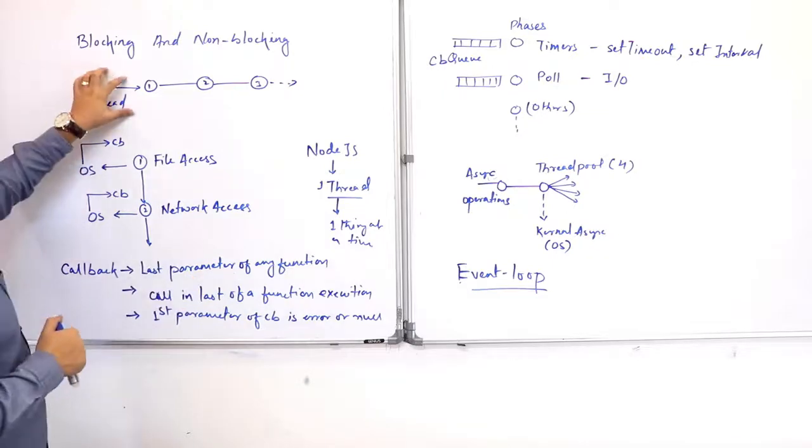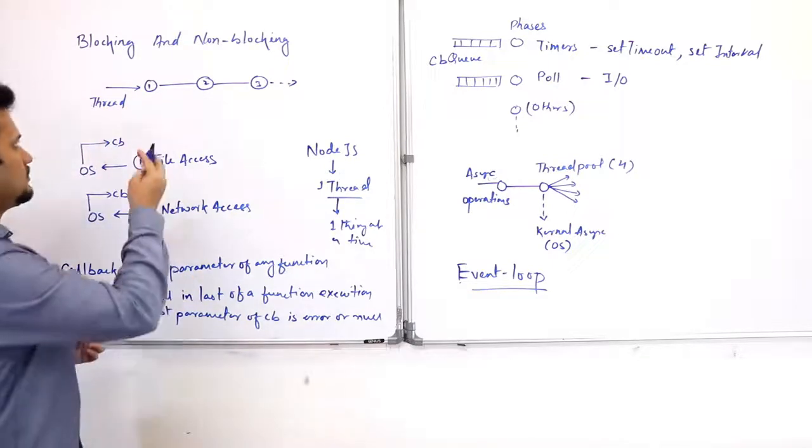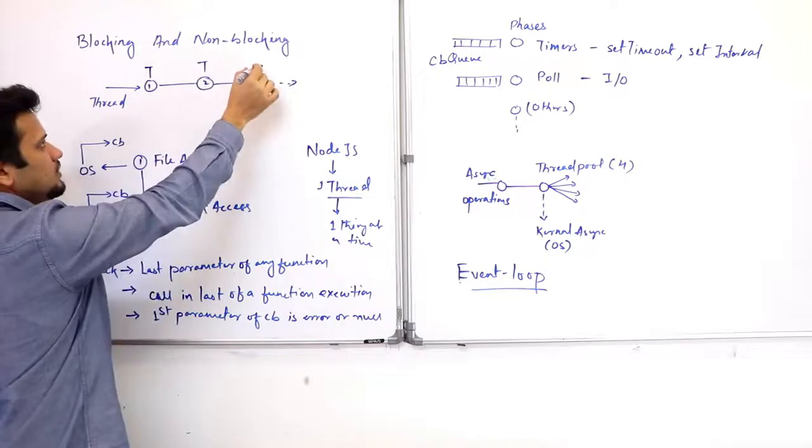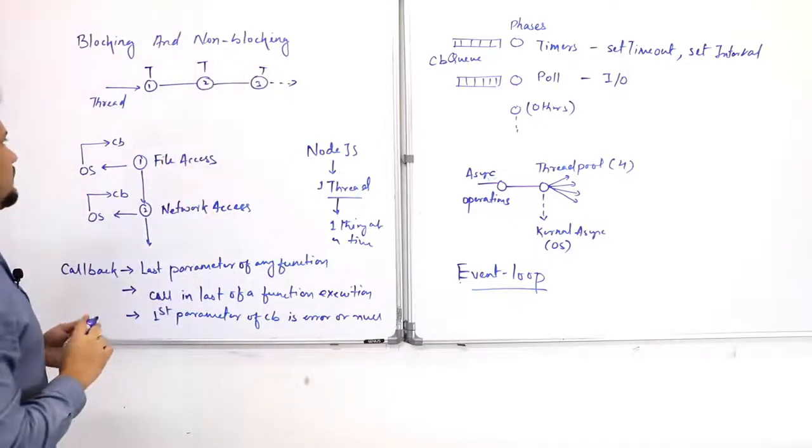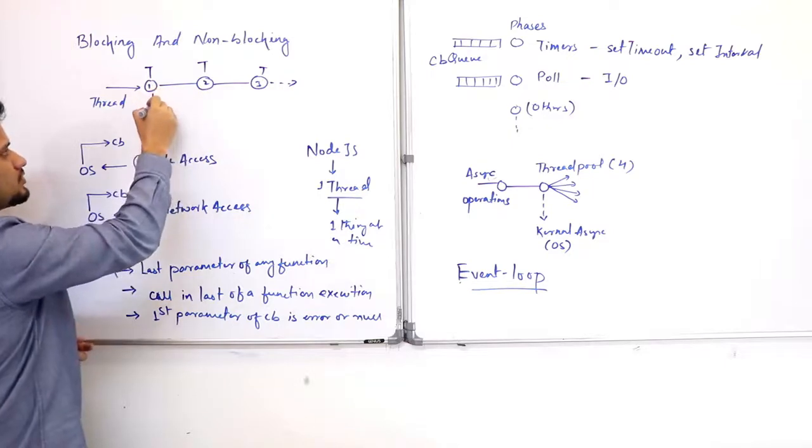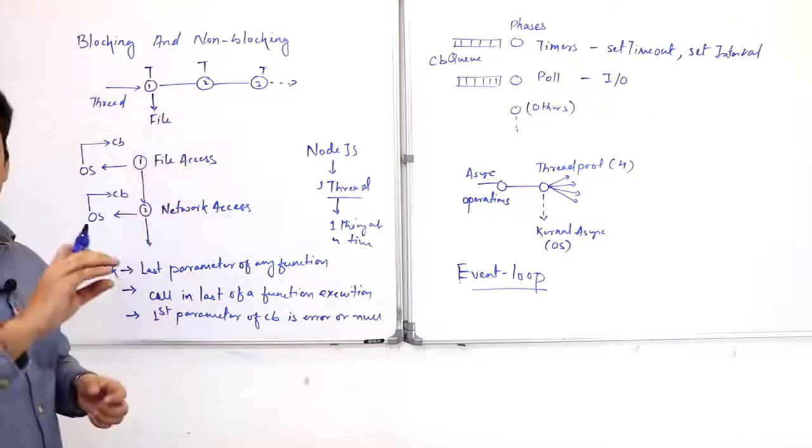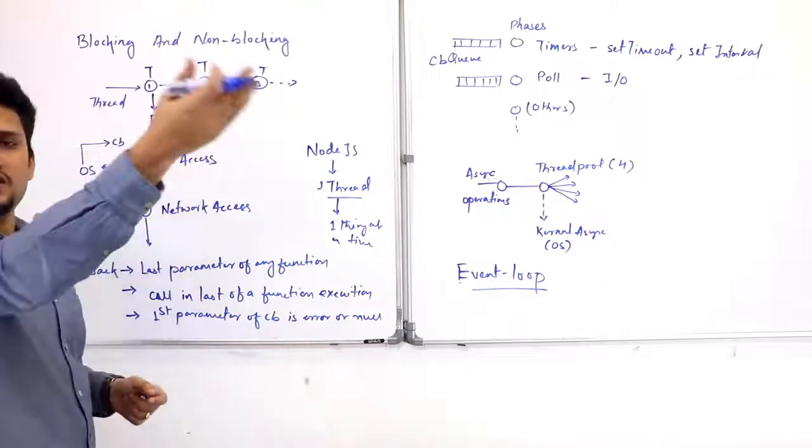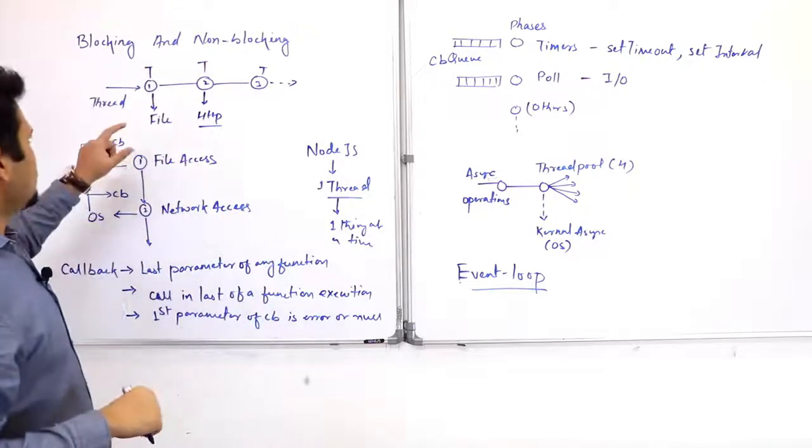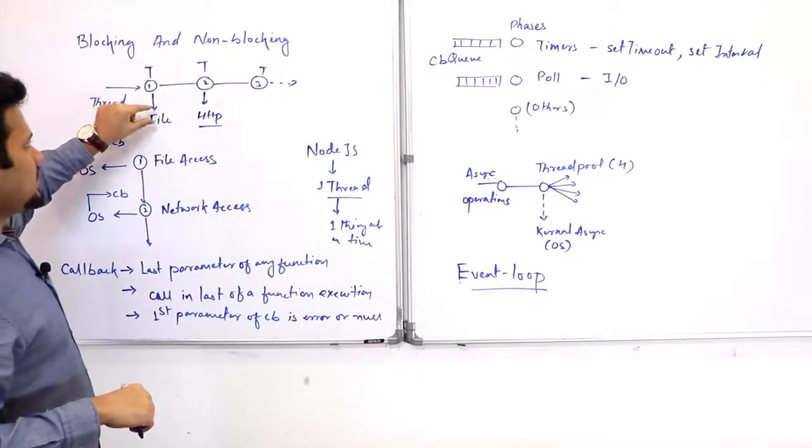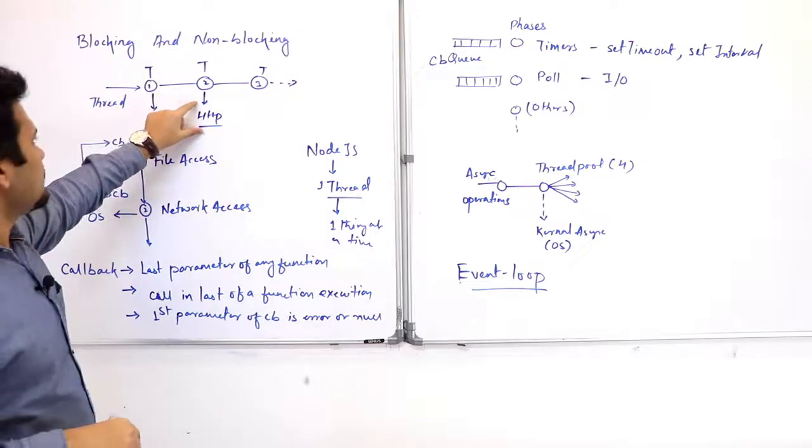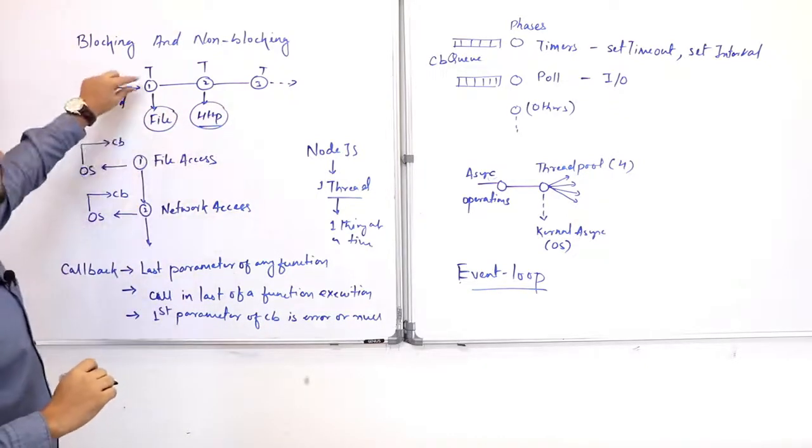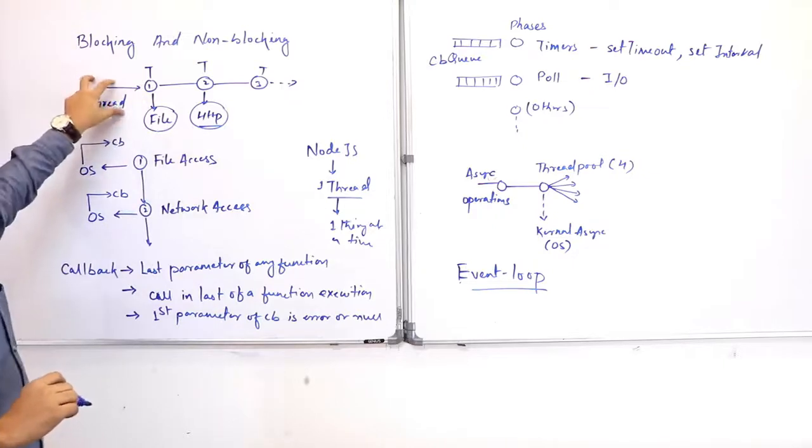Suppose there is a thread and we give it a task 1. After completing task 1, it wants to do task 2 and then task 3. Now suppose task 1 is file access—you want to read a file—and task 2 is to make a network request to some other service or some other server. When a file is being read, you cannot do a network call. So this file reading is blocking the network call. So this read of the file by that thread is blocking.